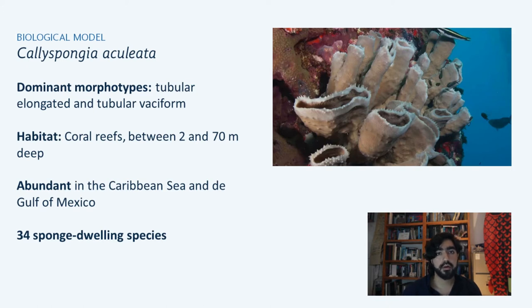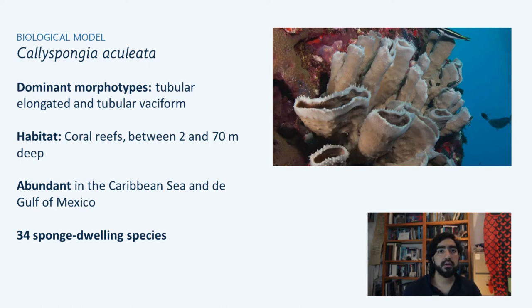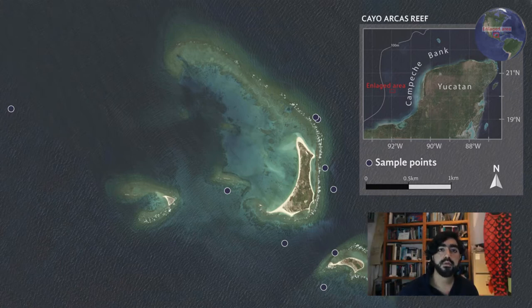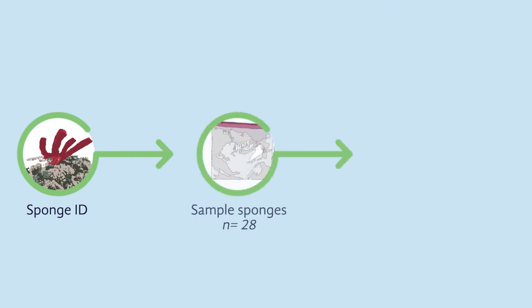The selected sponge was Calispongia aculeata. This sponge was abundant in the Gulf of Mexico and Caribbean Sea coral reefs. It has two dominant morphotypes: one elongated tubular and the other basiform tubular. It currently has a record of at least 34 sponge-dwelling species. To collect this sponge, we travelled to Cayo Arcas, a reef system located in the southern Gulf of Mexico. A total of 28 sponges of different size and shape were collected at nine sample points.